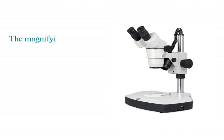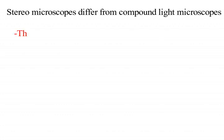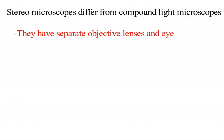The magnifying power of a stereomicroscope ranges from 7.5 to 75x. Stereomicroscopes differ from compound light microscopes in that they have separate objective lenses and eyepieces.